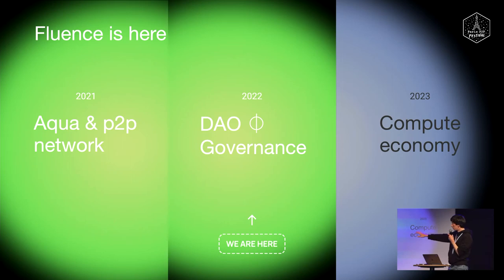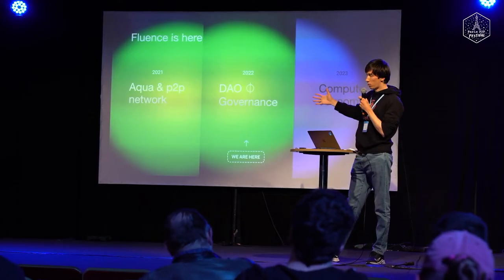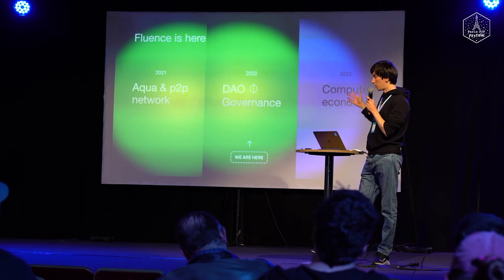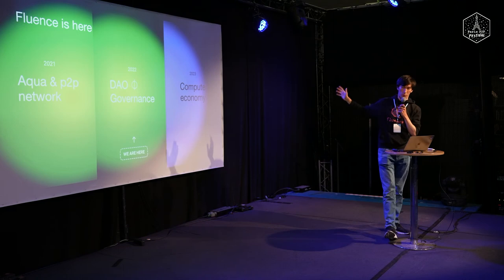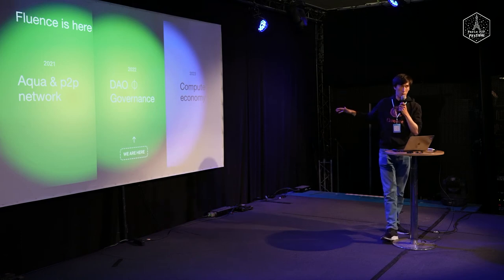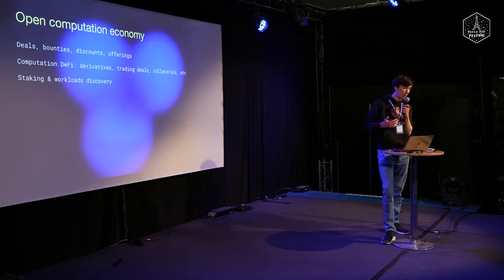Currently we have the Aqua language — it works — and the network. We're constantly improving, fixing bugs, and working on stability. We're moving toward launching the big Fluence DAO and governance model for the whole network, which should happen this year. We will then focus on the economics: how incentives work, how to make sure hosts are online, how to pay for hosting.